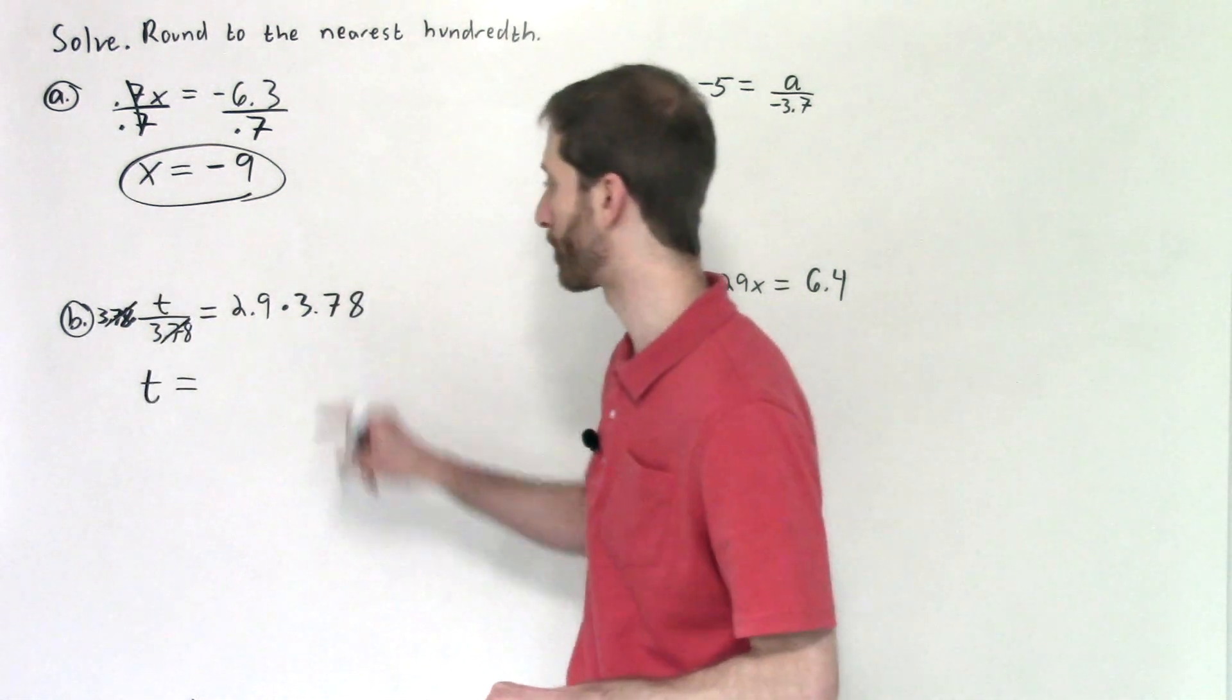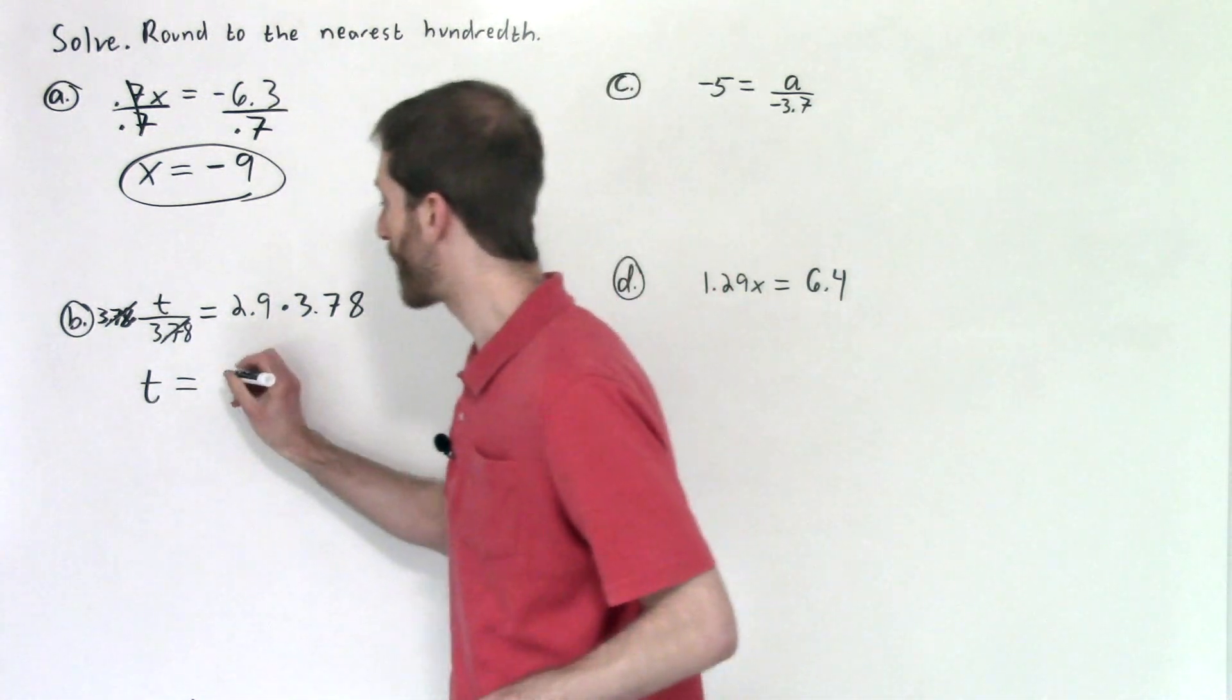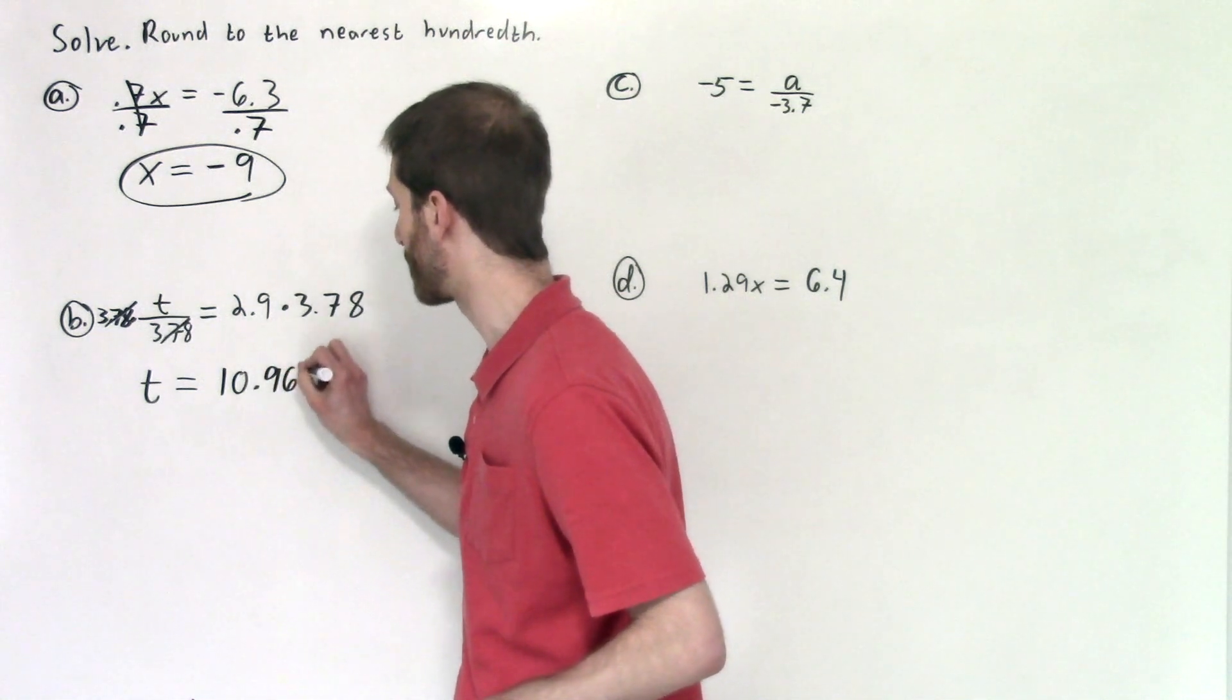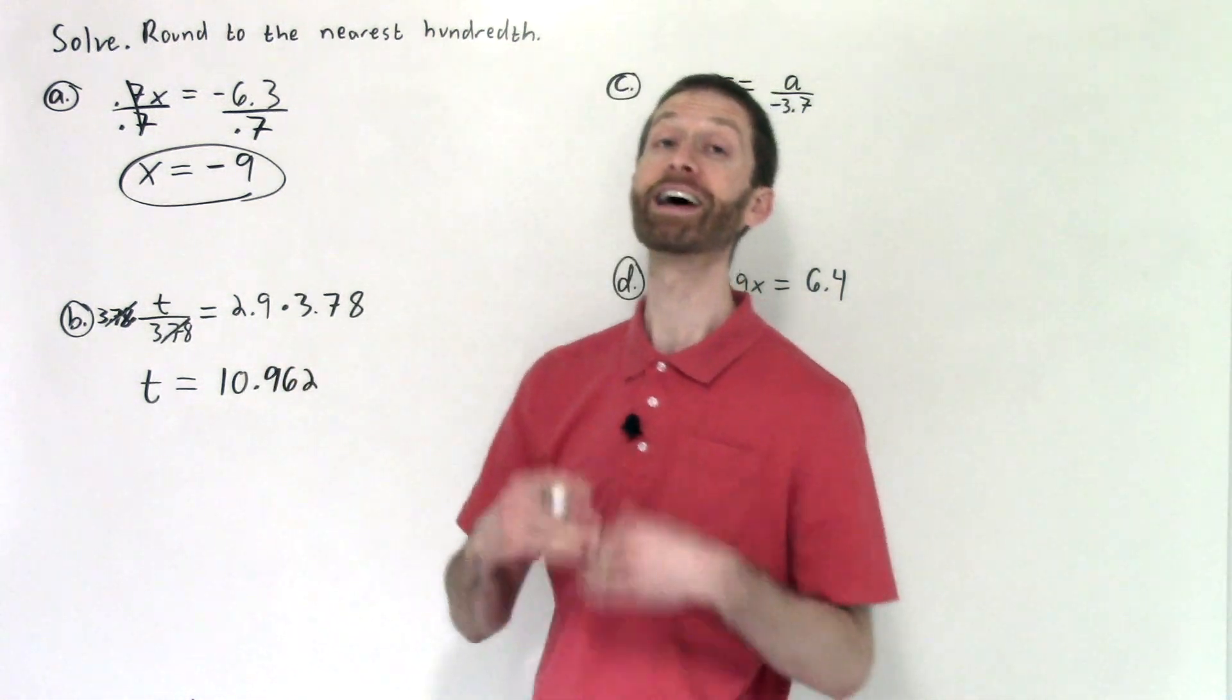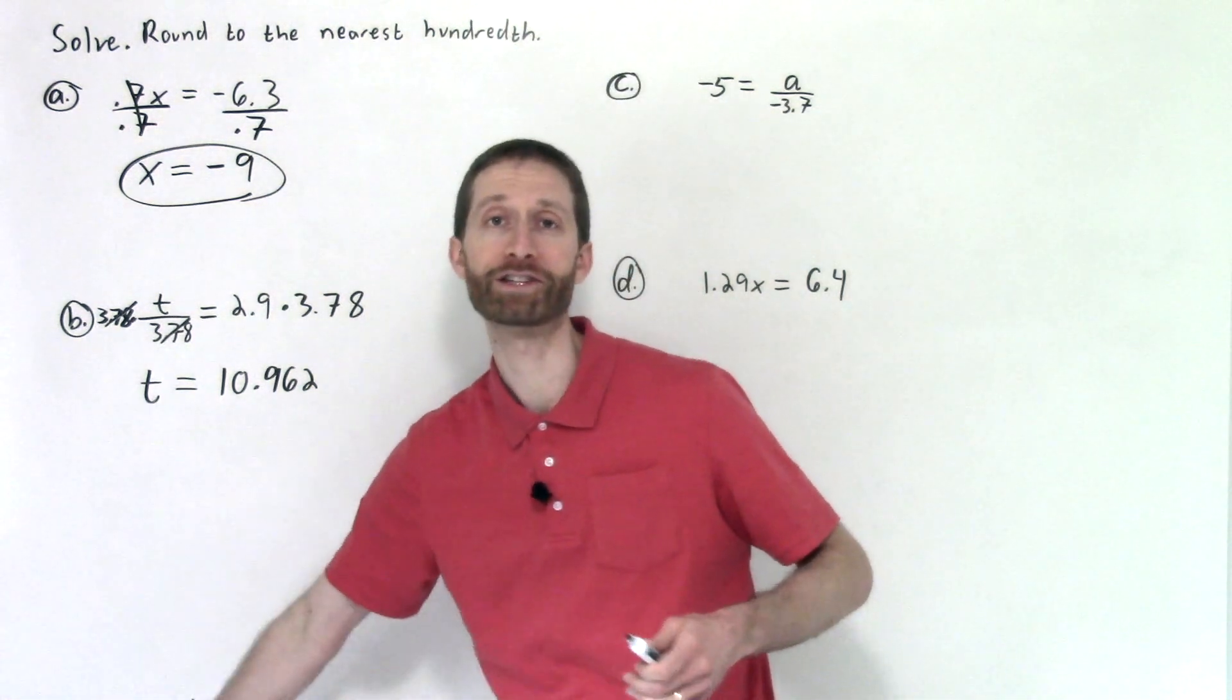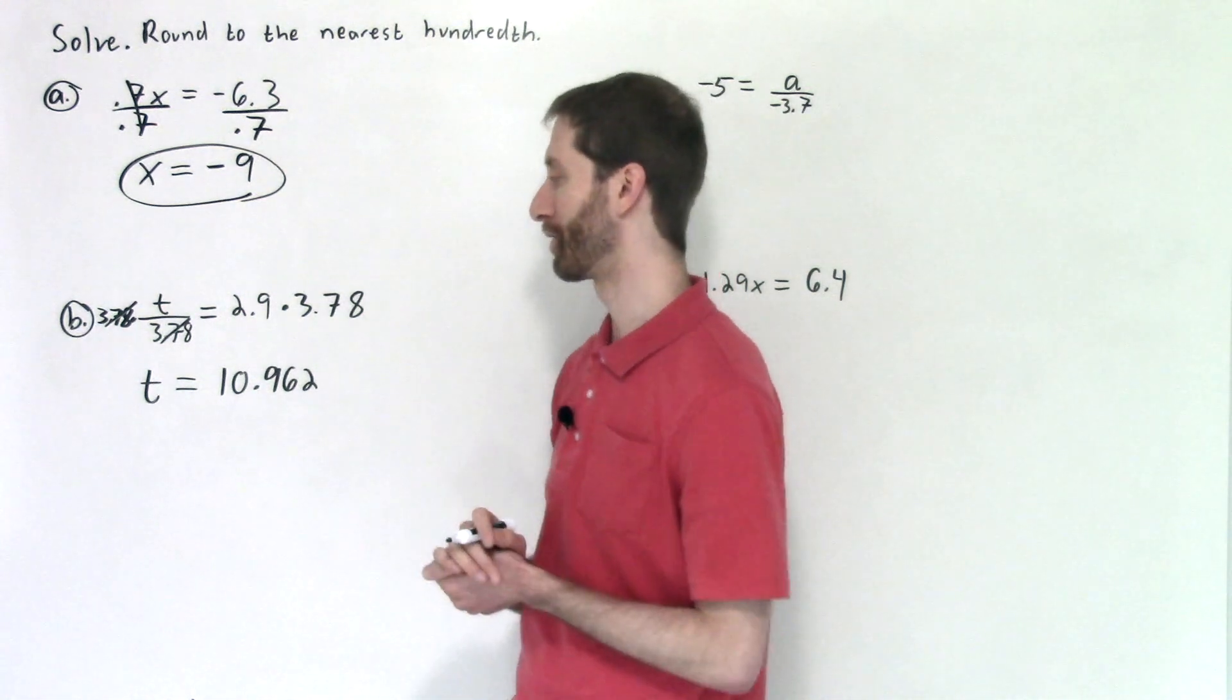And now we shift our focus over to the right-hand side and multiply 2.9 by 3.78. And you'll get approximately, or actually exactly 10.962. I didn't do that mentally. I used the calculator for that and have the number somewhere off to the side where you can't see it. Tricky. All right. So use your calculator for this one for sure.